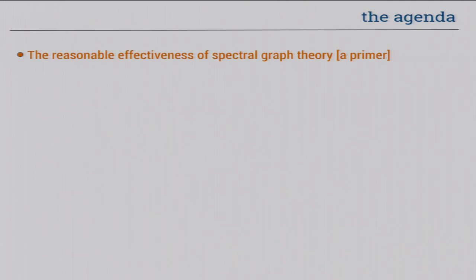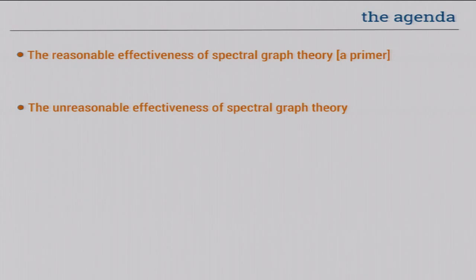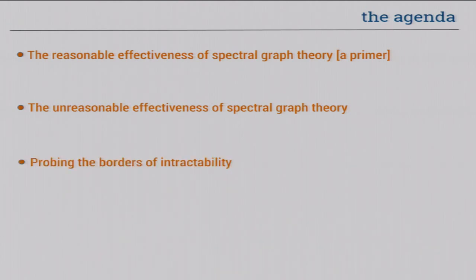Towards that end, here's a brief agenda. The talk has three parts. The first part will be the reasonable effectiveness of spectral graph theory — some beautiful classical things serving as an introduction. Then we'll move on to the unreasonable effectiveness, where we'll see some things that are true but shouldn't be. The last part will concern using spectral graph theory to confront issues in complexity theory, like P versus NP and the Unique Games conjecture.